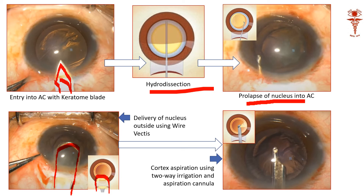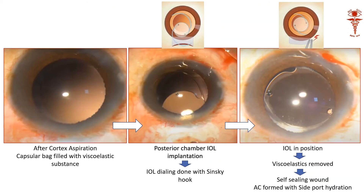Once the nucleus is expressed out of the main wound, all that remains is the loose cortical matter. For that, we use an instrument called a simco cannula, which is used to wash the cortical matter present in the capsular bag. These steps create a perfect, clean capsular bag with all nucleus and cortex removed.